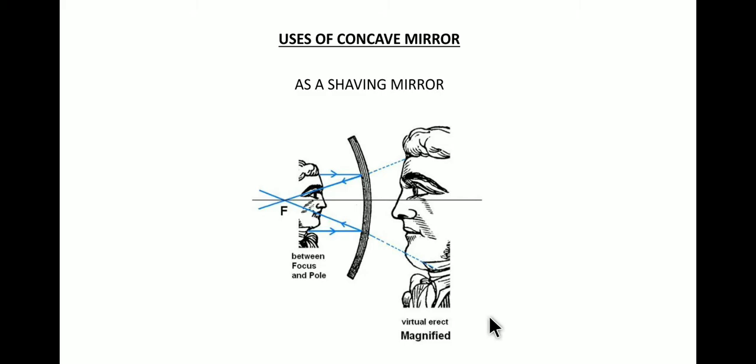And hence even the smallest hairs on the face can easily be seen and thus it is used as a shaving mirror. For this a concave mirror should have large focal length so that the face lies between its focus and the pole.